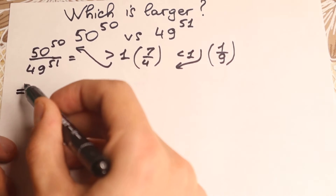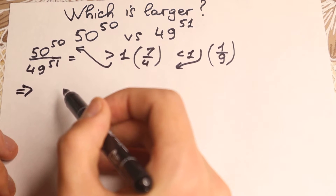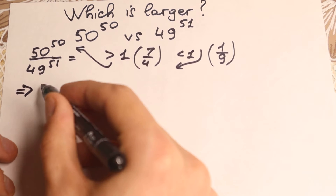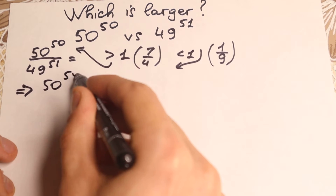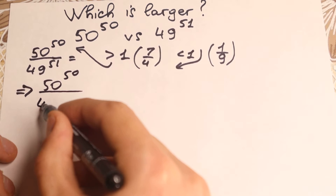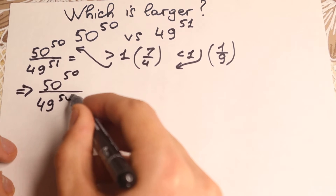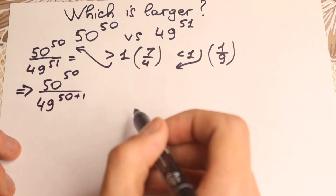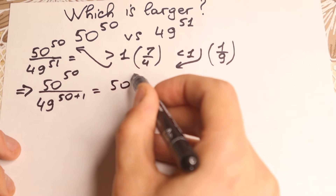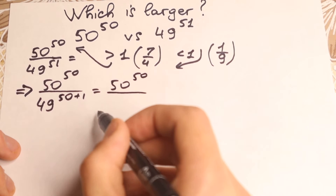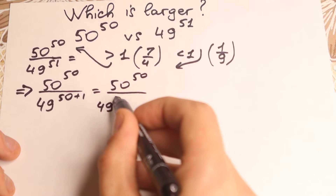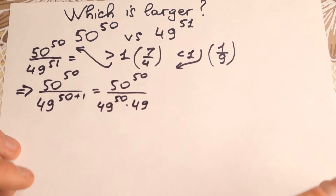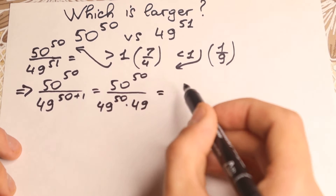So how can we simplify this? We have the power 51, and since 51 is close to 50, we can write the denominator as 49 to the power of 50 plus 1. So the numerator stays as 50 to the power of 50. Using power rules, we can write the denominator as a product: 49 to the power of 50 times 49 to the first power, which is just 49.